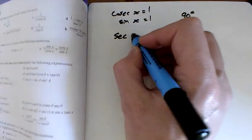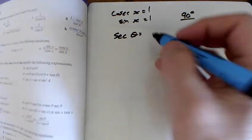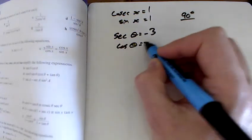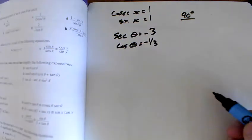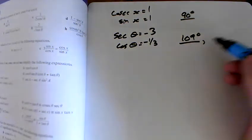Second one, I've got sec theta, sorry that should have been a theta that last one, but sec theta equals minus 3, so cos theta equals minus a third. The inverse cos of minus a third gives you 109 degrees. That's in the range, that's good.